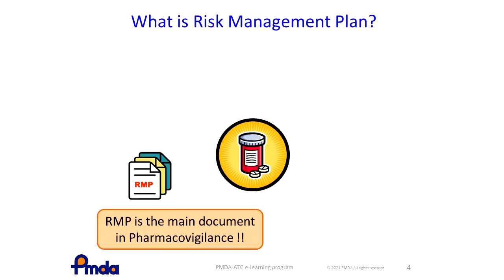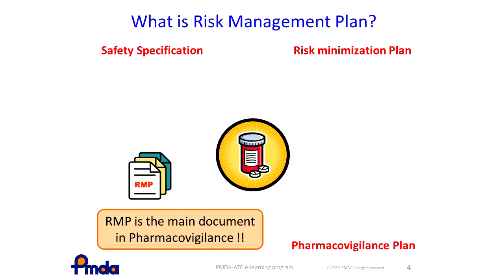Risk management plan, or RMP in short, is a detailed description of the risk management system. It has two aims. The first is to confirm whether pharmacovigilance and risk minimization activities are going on as planned. The other is to share with stakeholders what risks there are in the drug, what pharmacovigilance activities are being conducted for risks, and what risk minimization activities are being implemented for risks. RMP consists of three elements: safety specification, pharmacovigilance plan, and risk minimization plan.